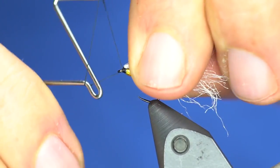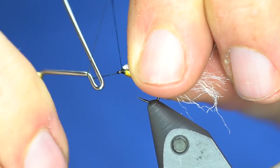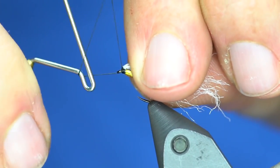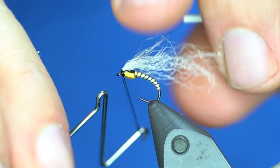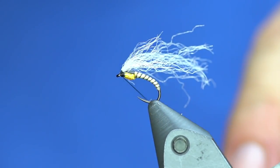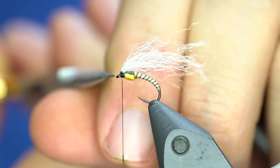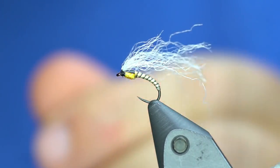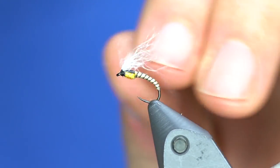Okay, now we're just going to come in here and whip finish. This is where that nice little TMCO whip finisher comes in handy. And then trim our breathers down to normal size.